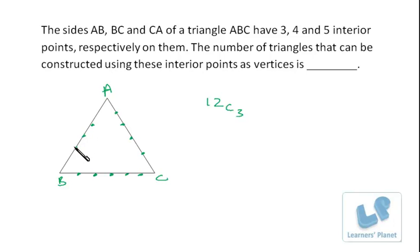So we need to deduct the combinations obtained by these three points, so it's minus 3C3. Here four points are collinear, so we need to deduct all the combinations from this, so it's 4C3.